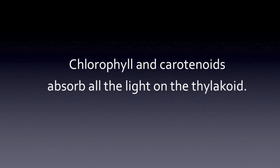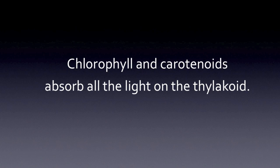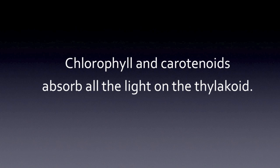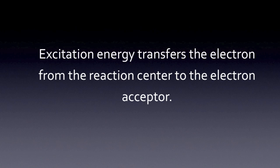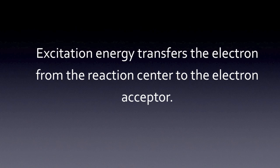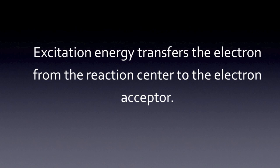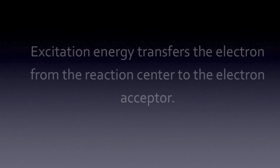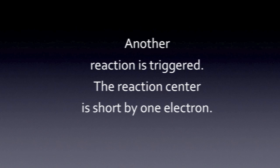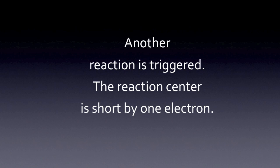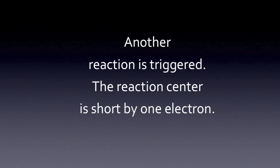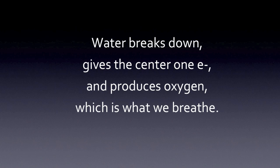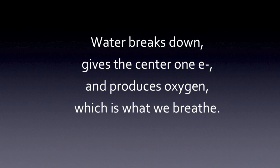Chlorophyll and carotenoids absorb all the light on the thylakoid. Excitation energy transfers the electron from the reaction center to the electron acceptor. Another reaction is bigger — the reaction center is short by one electron. Water breaks down, gives the center one electron, and produces oxygen, which is what we breathe.